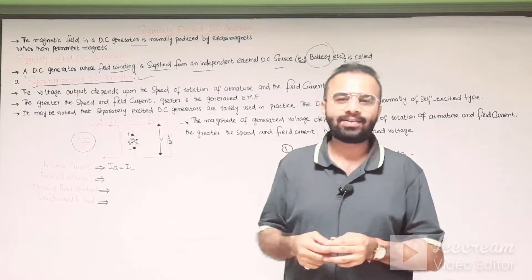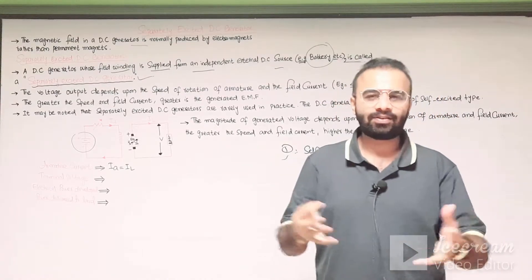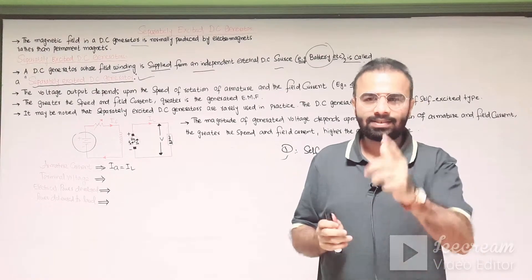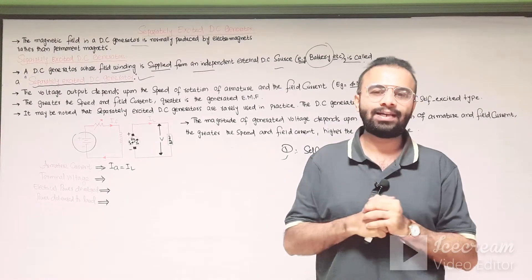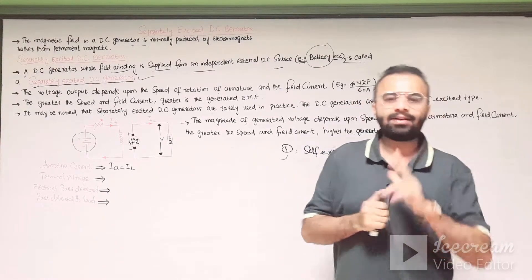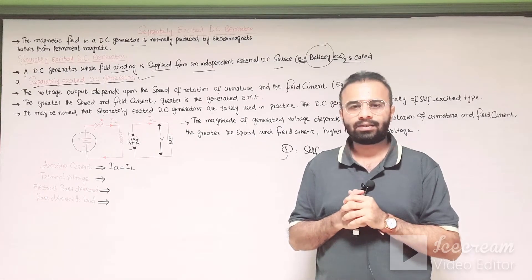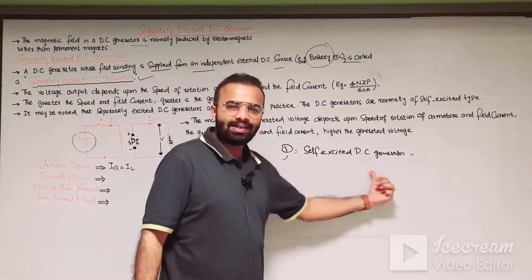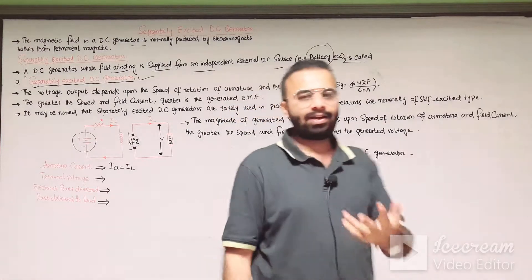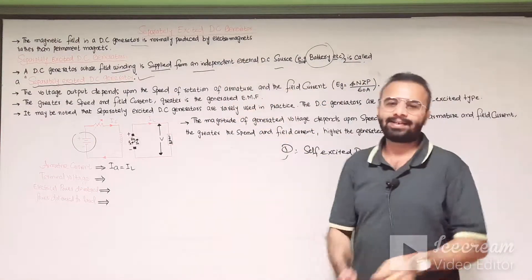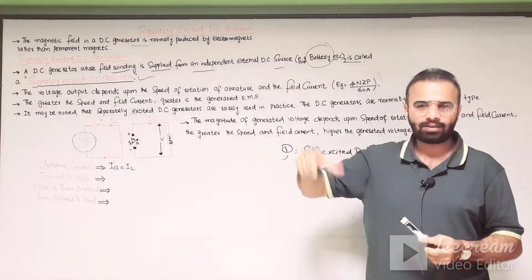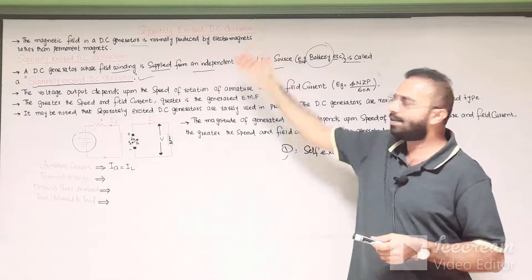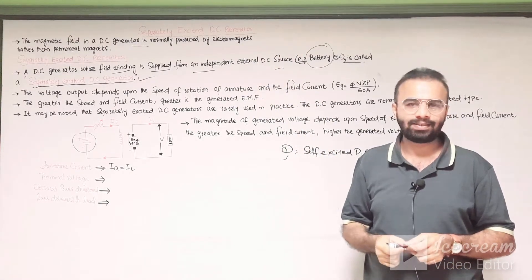Assalamu alaikum dear viewers. Shwebhamad Dha is here with a new lecture of the electrical machine series. Today we are going to discuss the DC separately excited generator. There are two types of the DC generator: number one is the self-excited DC generator and number two is the separately excited DC generator, and in today's lecture we are going to discuss the separately excited DC generator.